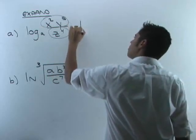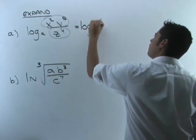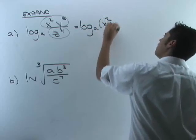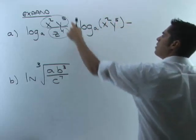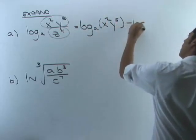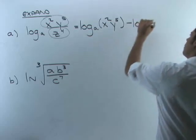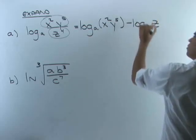So I'm going to say here's log base a. Now what's the numerator? x squared y to the fifth. Then minus, because it was division, log base a of the denominator, which is z to the fourth.